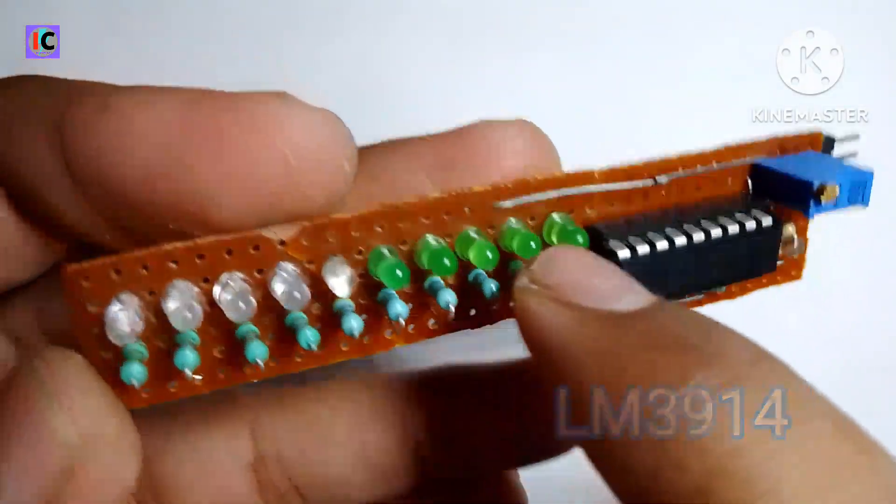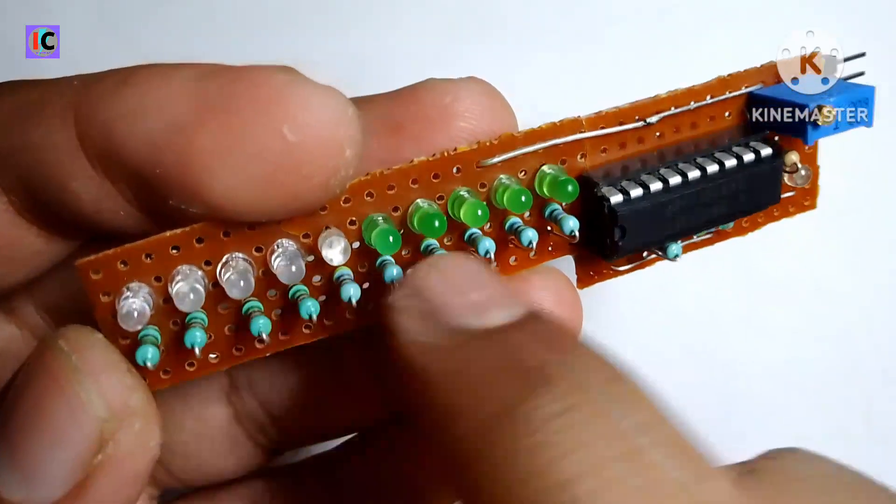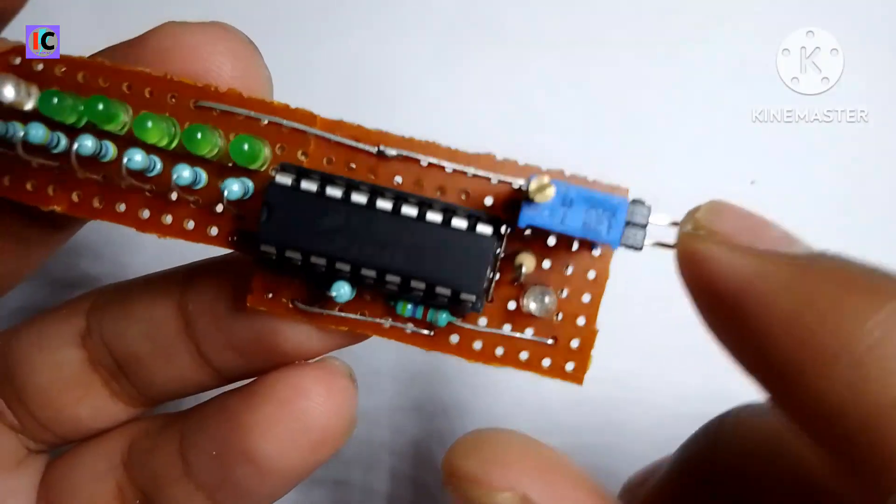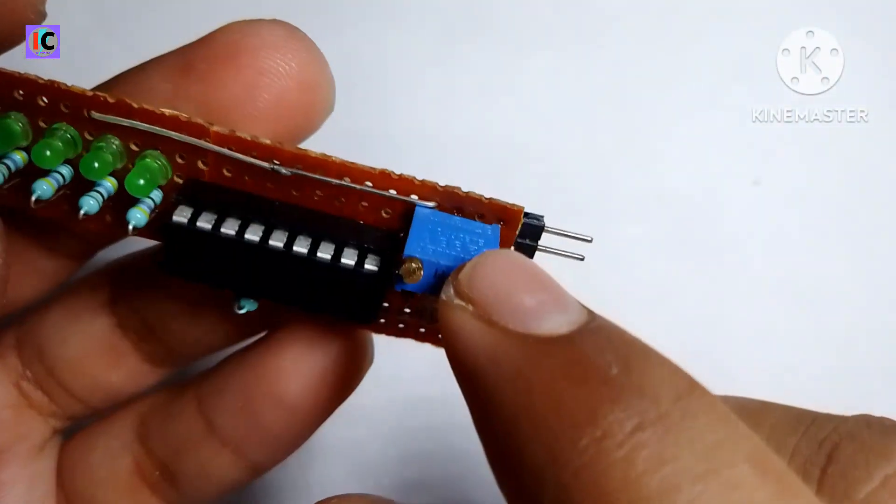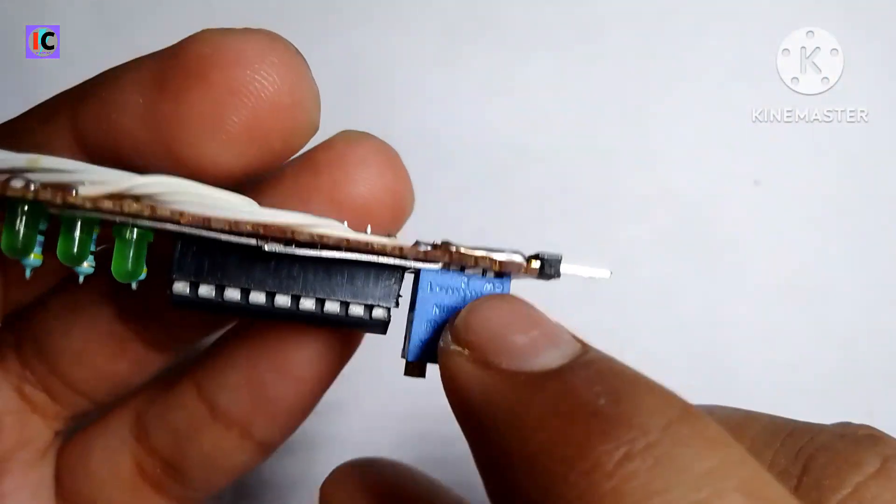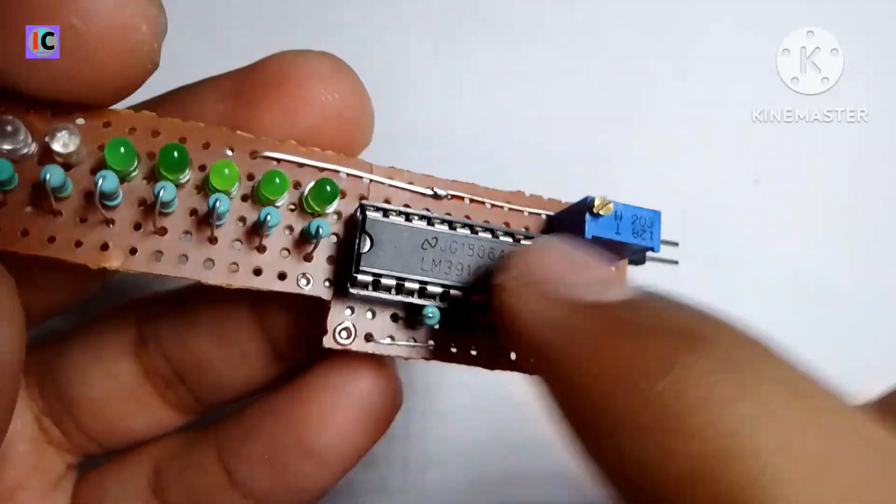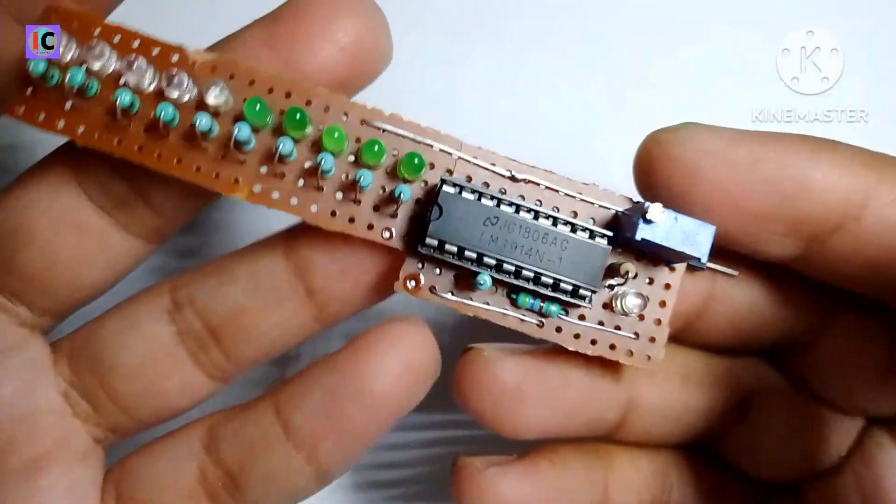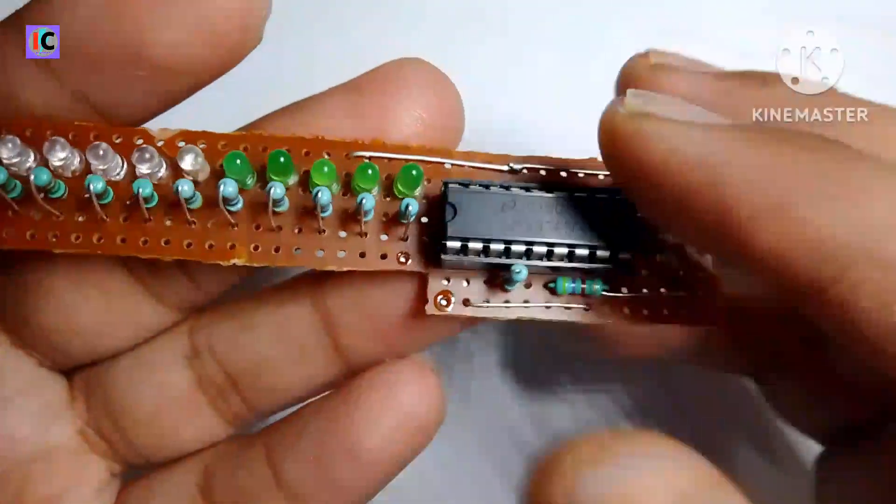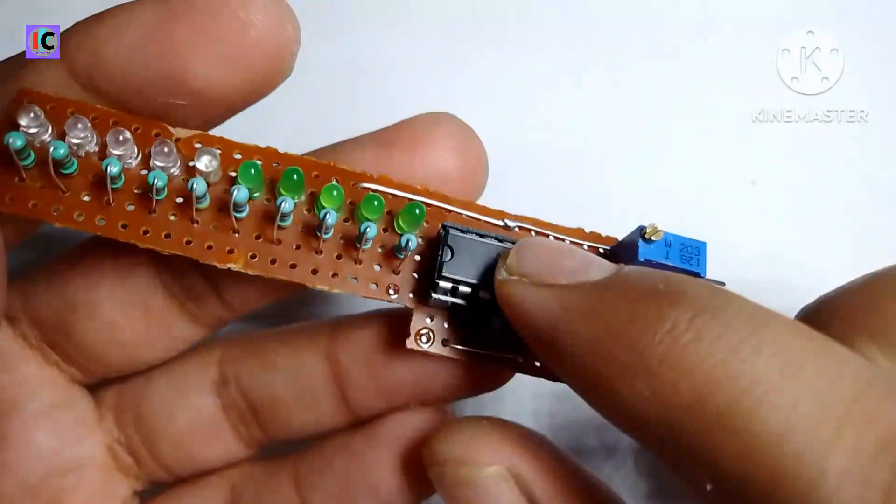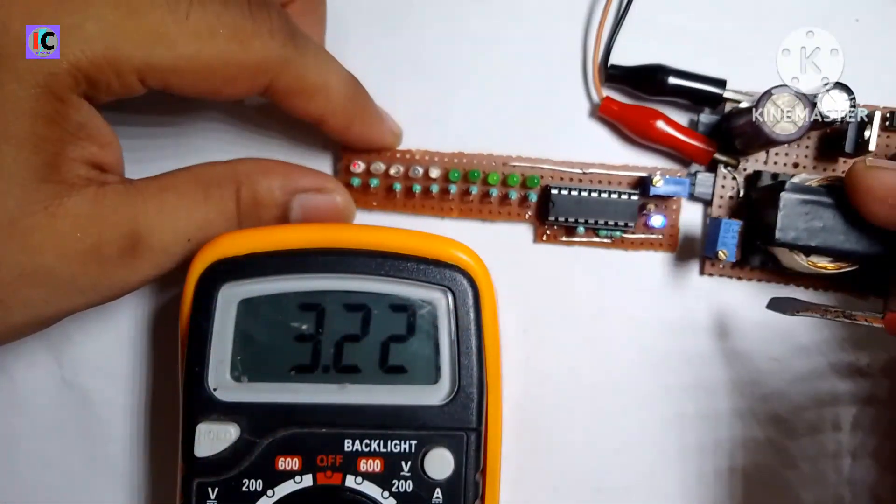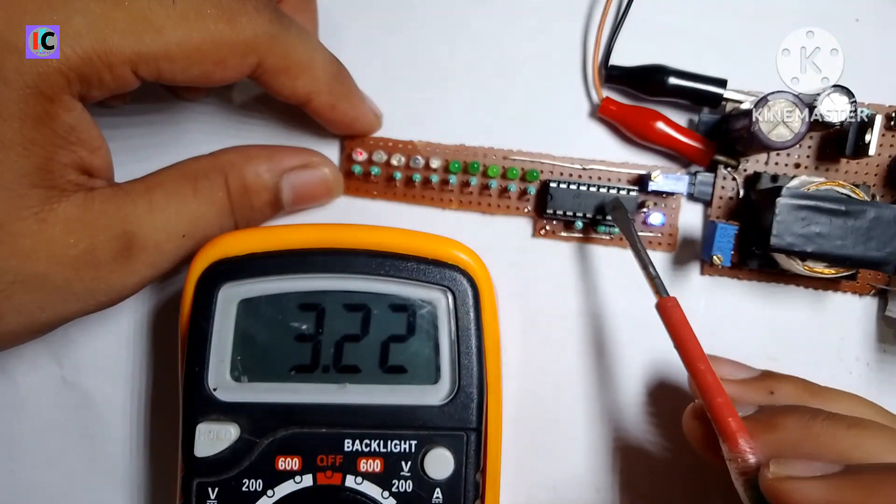You can see the LEDs for the output indication, the input position, and this is the 10k preset for adjusting the sensitivity of this circuit. Before starting this video, please like this video and watch the whole video for more information.